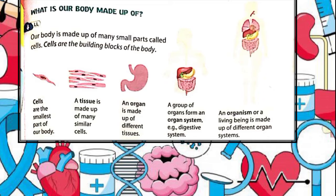A group of cells meant to perform a specific function is called tissue. Simple tissues are composed of similar cells, while complex tissues are composed of different types of cells.